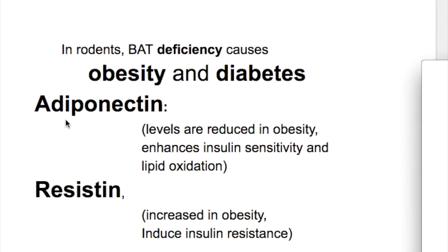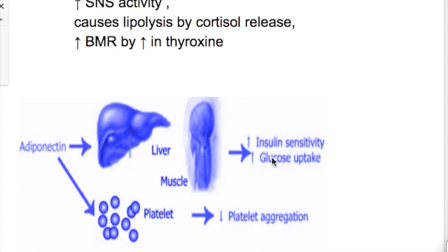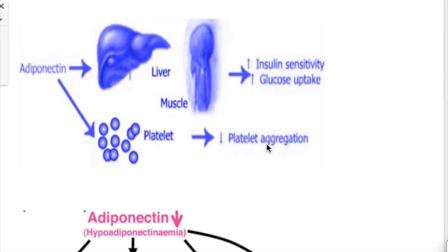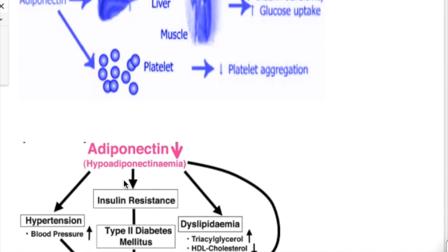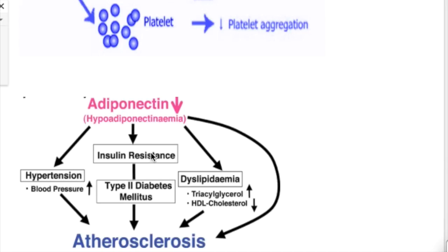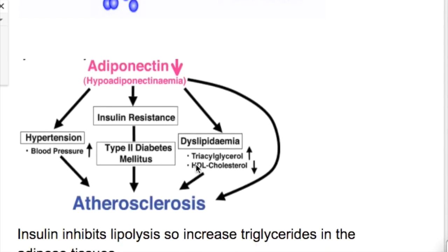The next hormone is adiponectin. Its levels are reduced in obesity. It enhances insulin sensitivity and lipid oxidation — specifically, it increases insulin sensitivity, increases glucose uptake, and decreases platelet aggregation. When hypoadiponectinemia occurs, as in obesity, insulin resistance increases, leading to type 2 diabetes, and hypoadiponectinemia leads to atherosclerosis via diabetes mellitus, hypertension, and dyslipidemia due to increased triacylglycerol and decreased HDL.